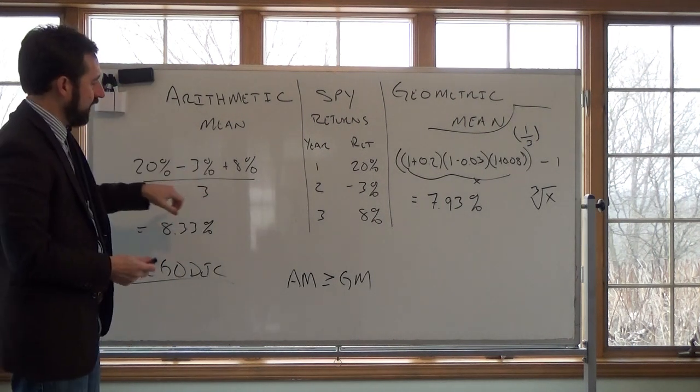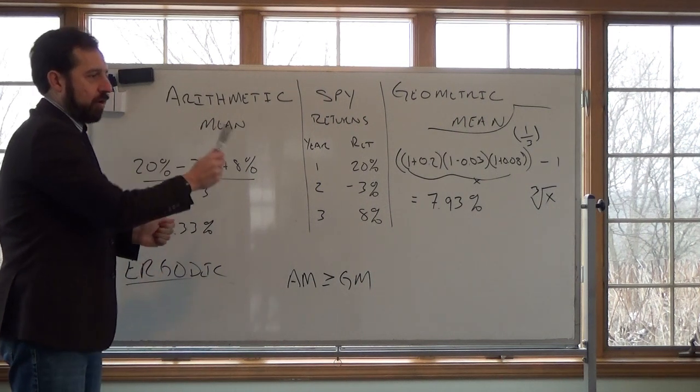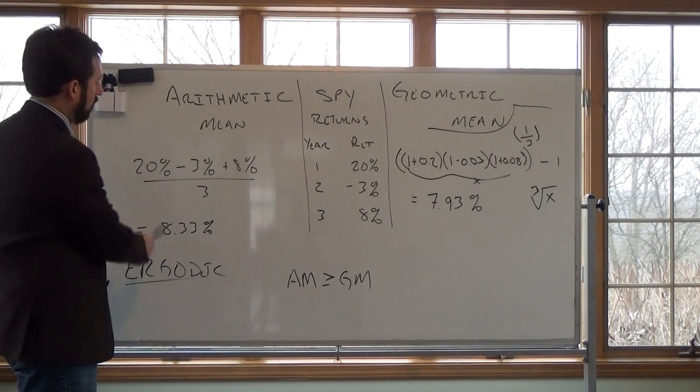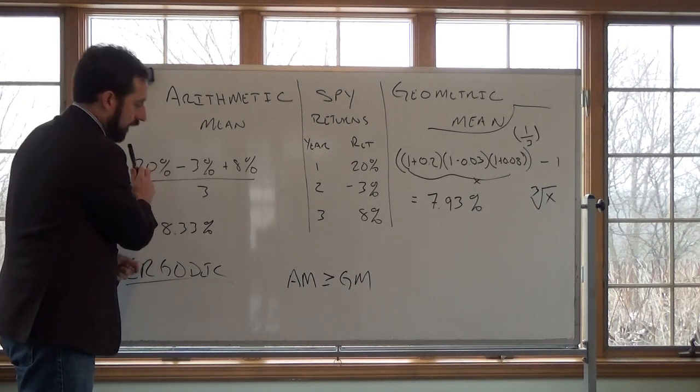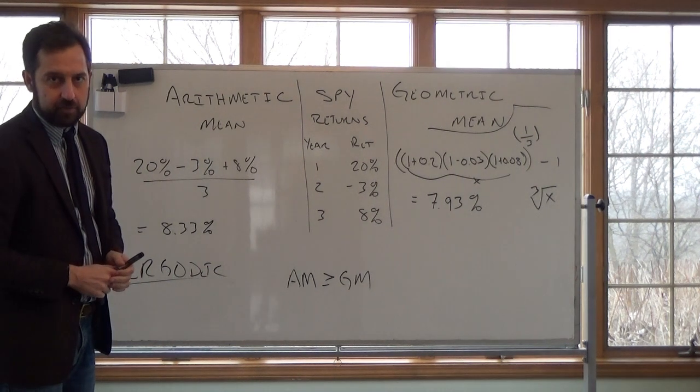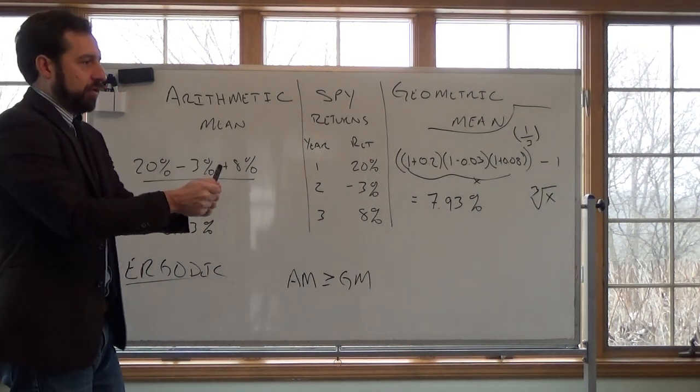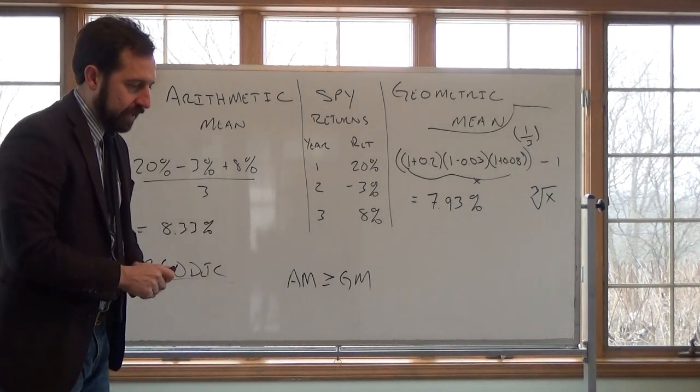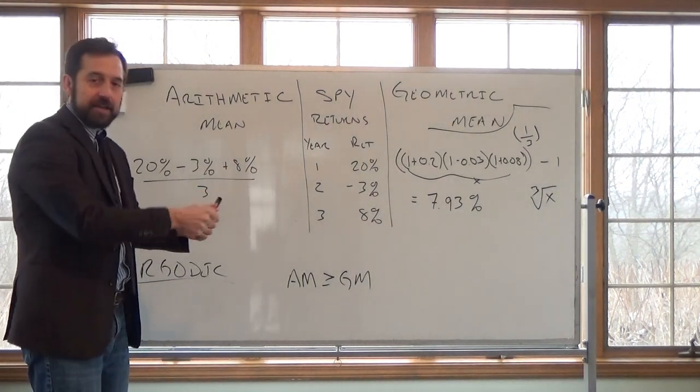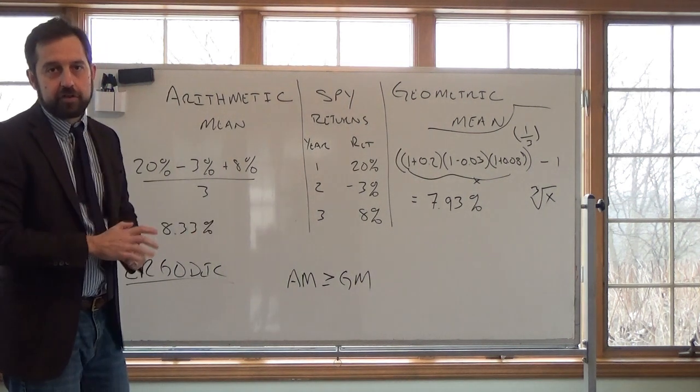because what we really want to do here is say, I want to take a mean over all the states of the world. So basically what we're saying here is I can take a mean over time. It's like saying we're taking a mean over all different states of the world. So if you're wondering about that, how can we look back in time and assume that that's what we expect next year, we're kind of using that. We're assuming that the returns are ergodic.